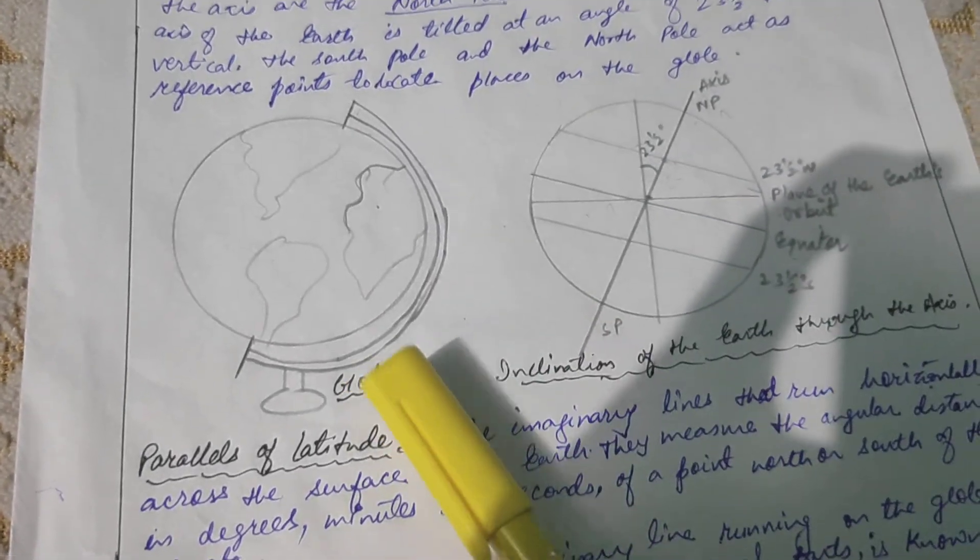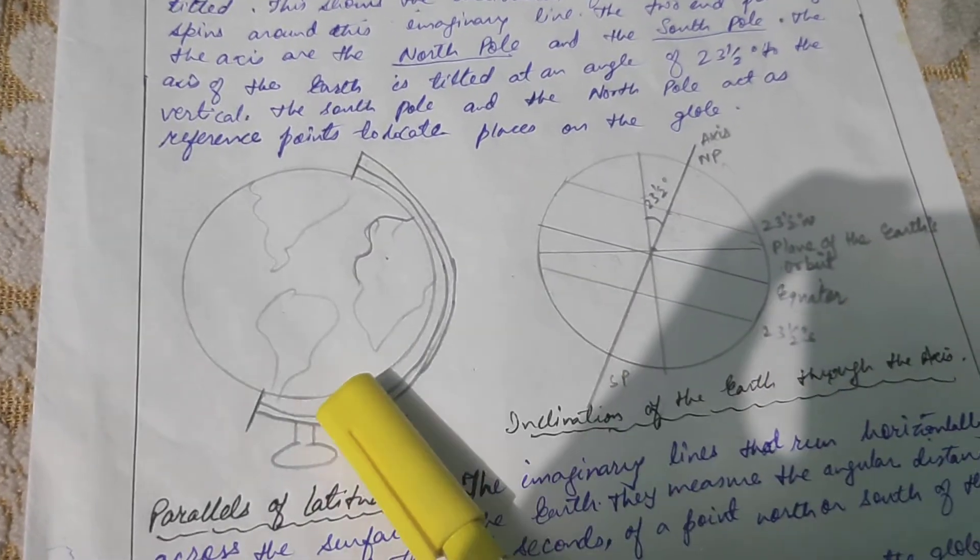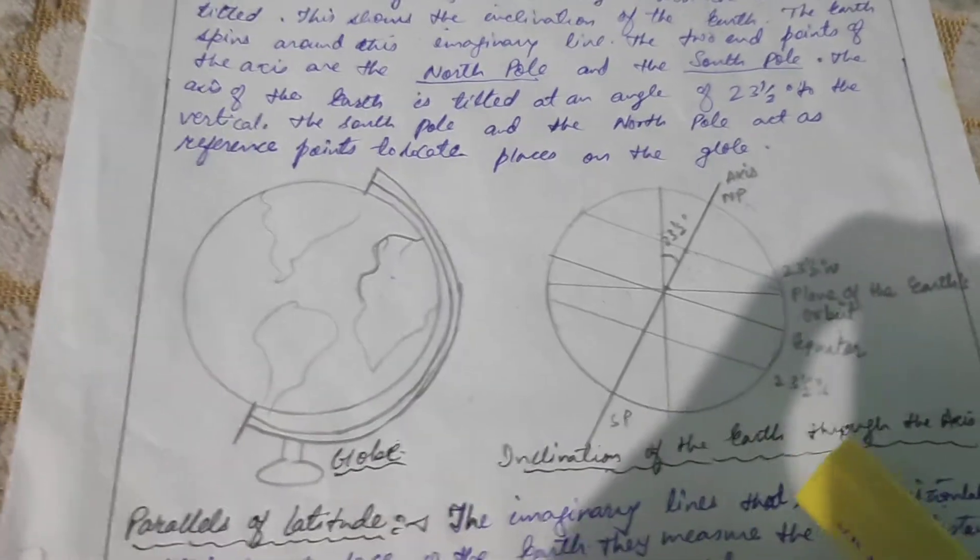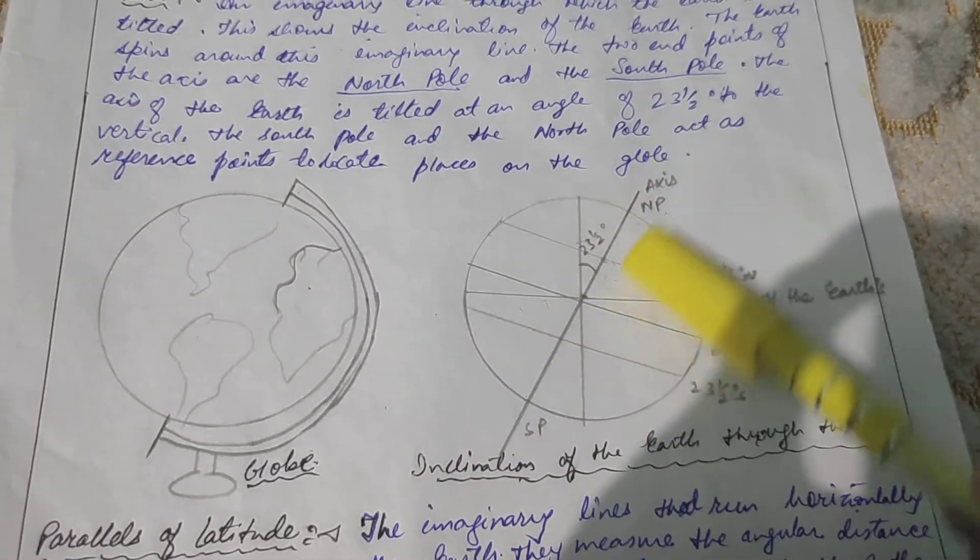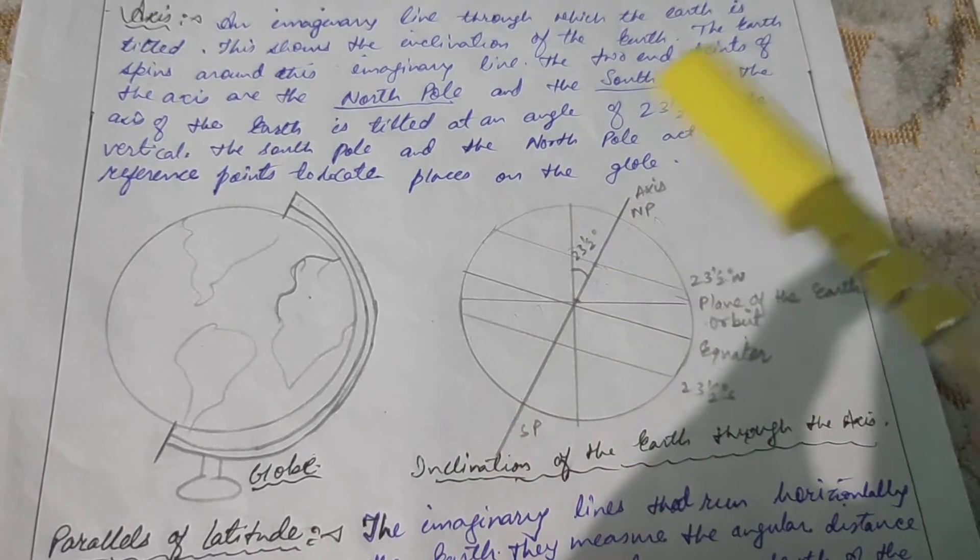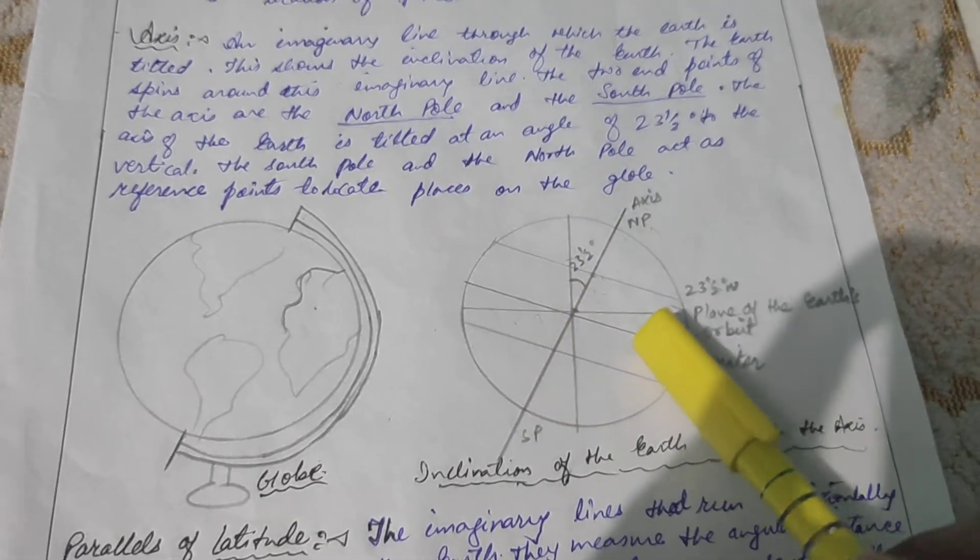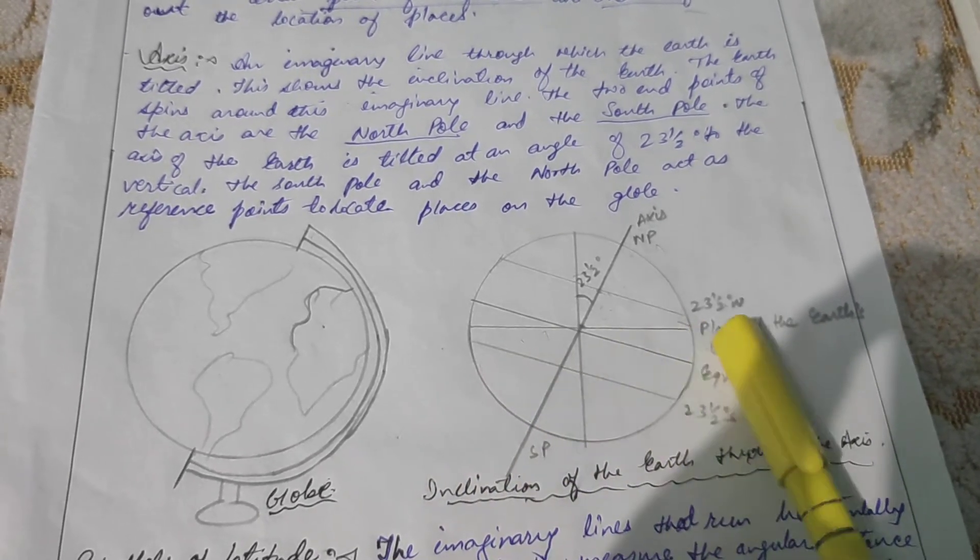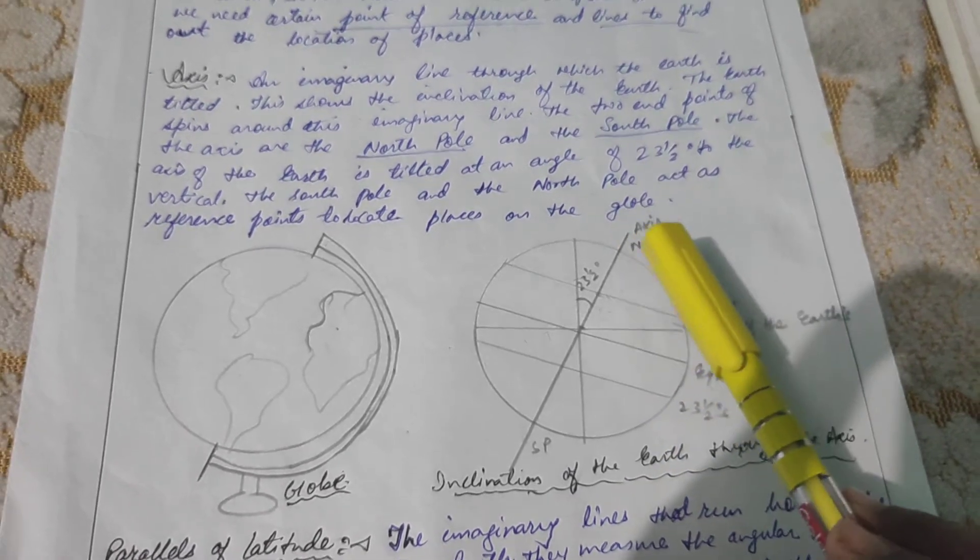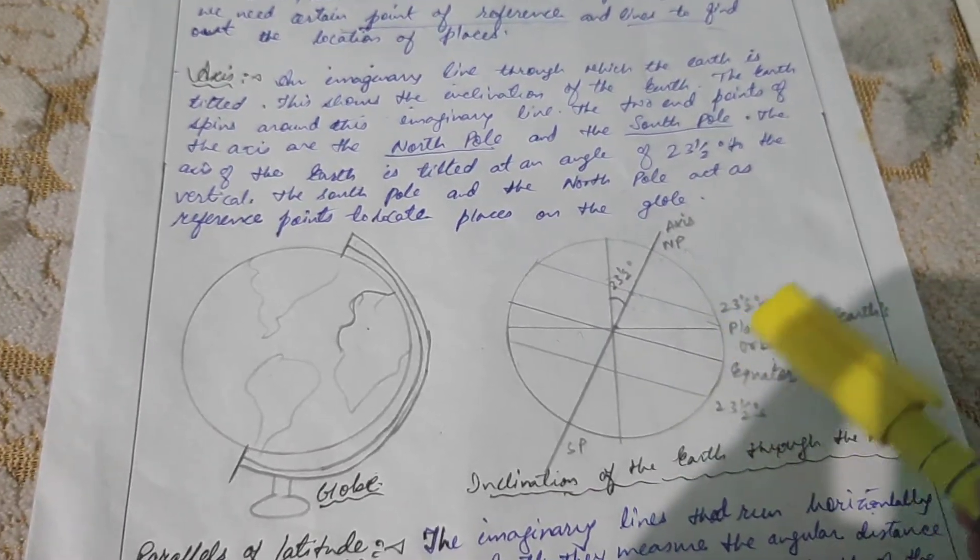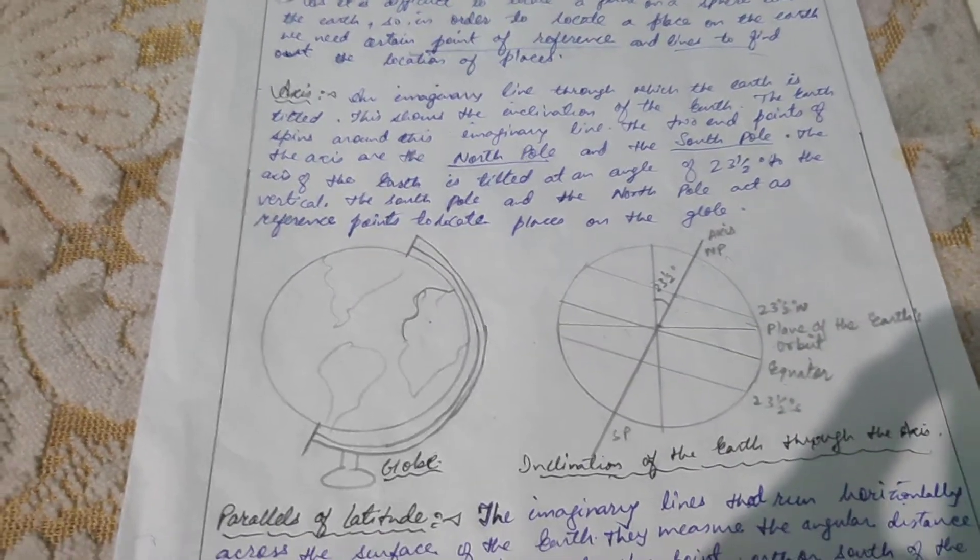Here you can look into the picture. It is a picture of a globe, a rough image of a globe. By seeing this you can get a rough idea of the Earth. The second picture shows the inclination of the Earth through the axis. It is an imaginary line through which the Earth is inclined at an angle of 23.5 degrees to the vertical, that is to the orbital plane. This is the plane of the Earth's orbit. This is the equator, the Tropic of Cancer, Tropic of Capricorn, the North Pole and the South Pole.